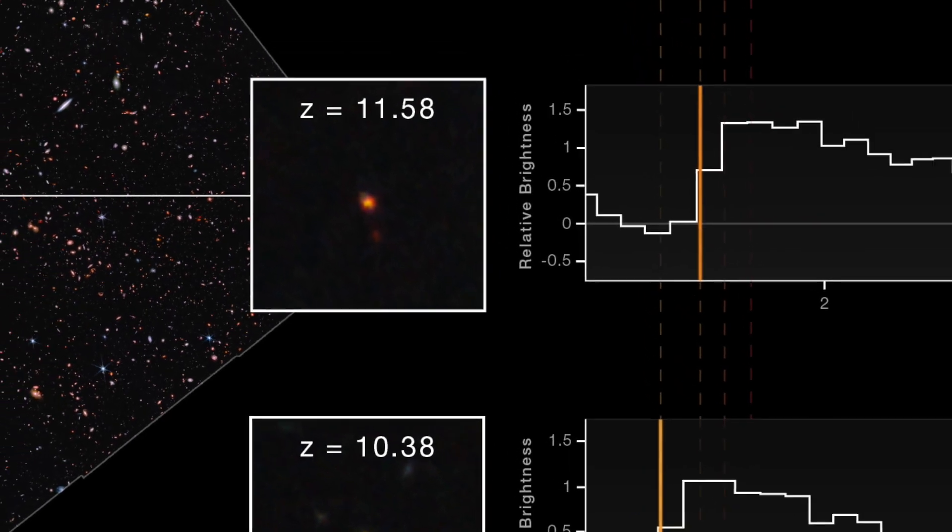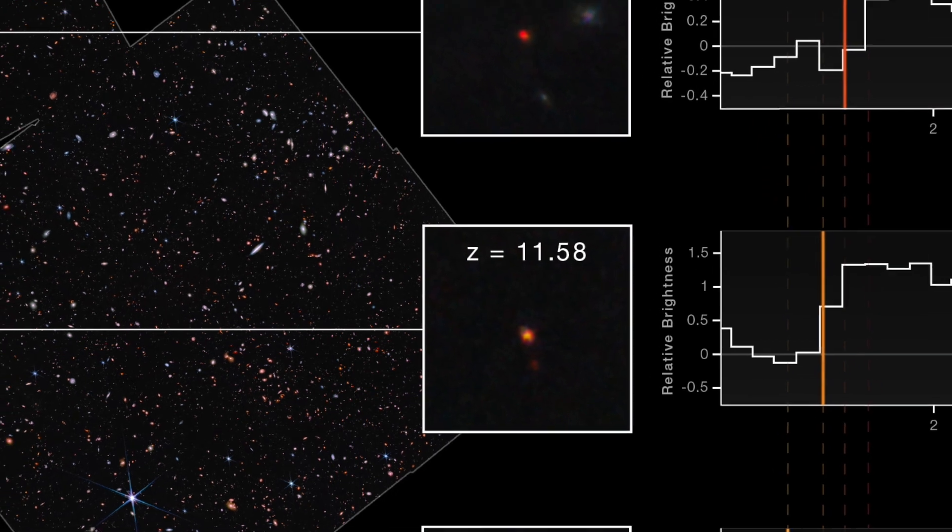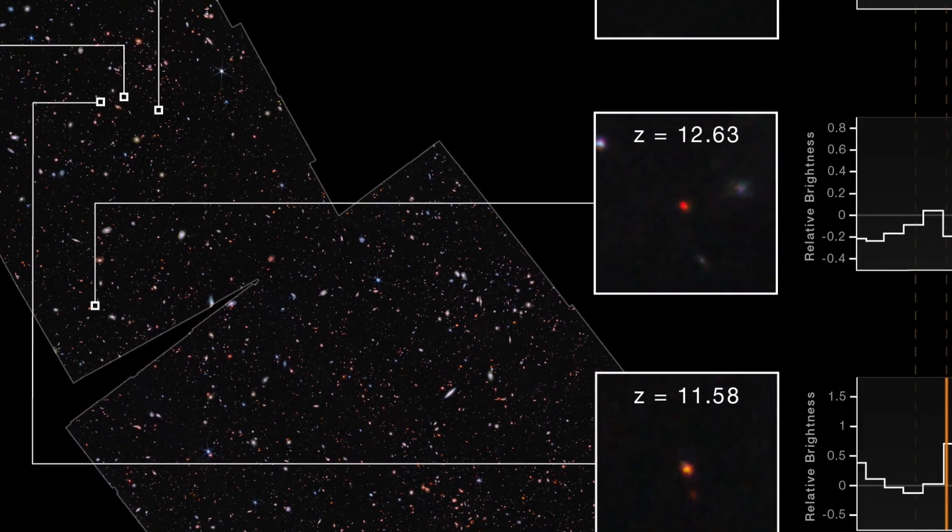These galaxies are extremely dim because of their vast distance from us. But now, astronomers can study their properties thanks to James Webb's exceptional sensitivity.